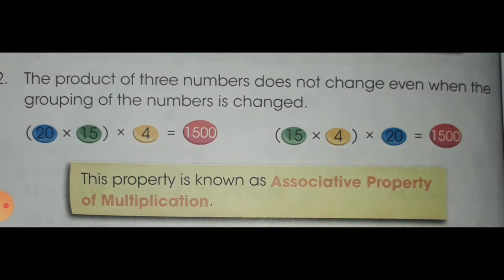In the first group, we multiply 20 and 15 first, and then multiply the result with 4. In the other group, 15 and 4 multiply first, and then the answer is multiplied with 20. The grouping is changed but the product is still the same. This property is known as the associative property of multiplication.